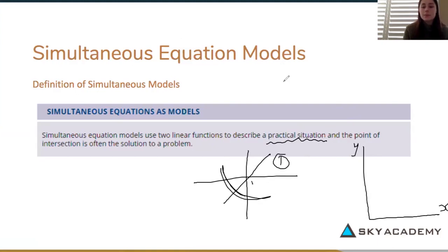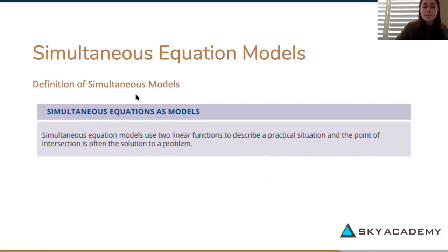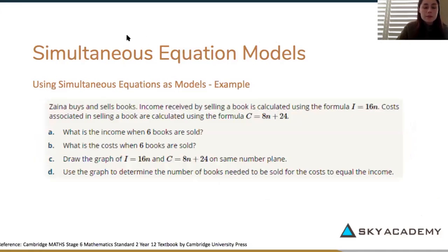Let's have a look at an example. Here we have an example where we're buying and selling books. Income is received by selling a book and it's calculated using the formula where income equals 16n. Cost in selling a book is calculated using the formula cost equals 8n plus 24. This question has been nice, it's given us the equation for income and the equation for cost. Sometimes they won't give you the equations and you have to calculate them yourself but they have in this question.